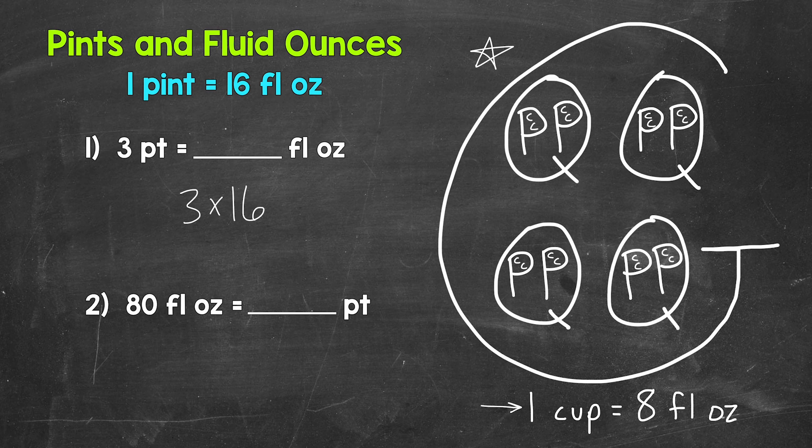Now, three times 16 gives us 48. Three pints equals 48 fluid ounces. Again, when we go from pints to fluid ounces, multiply by 16.